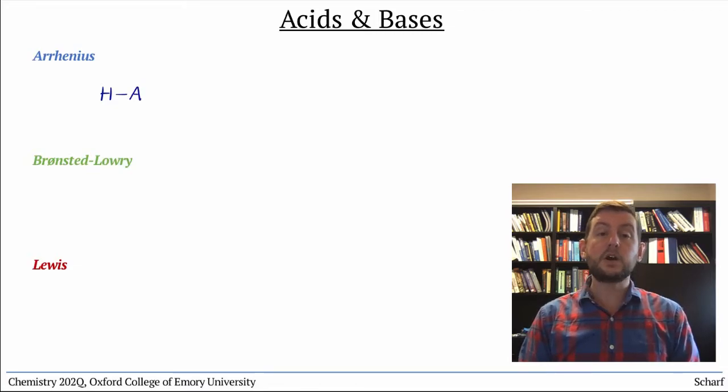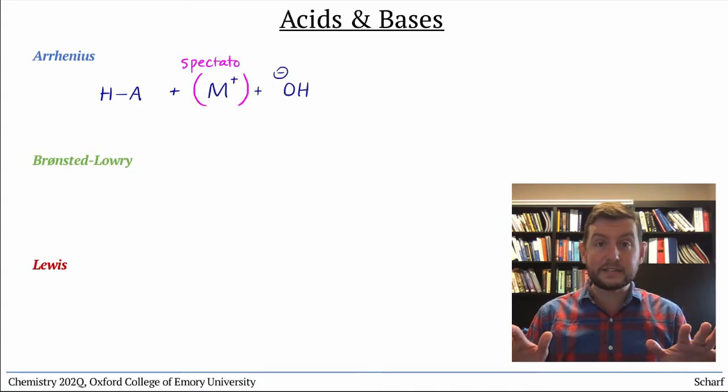Arrhenius bases are ionic compounds that contain a metal cation and one or more hydroxide ions. The metal ion is a spectator ion. It doesn't do anything.